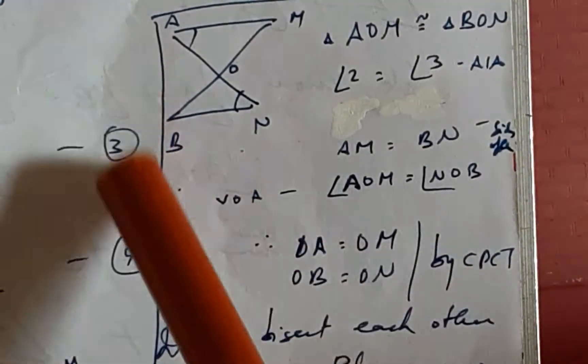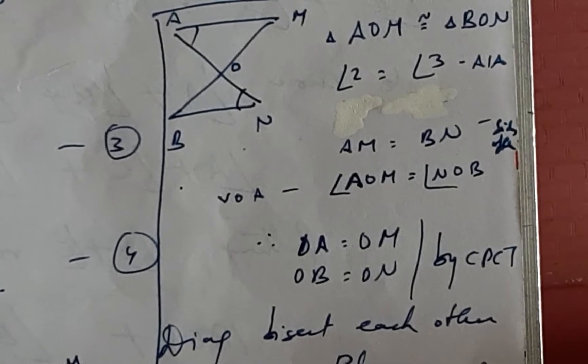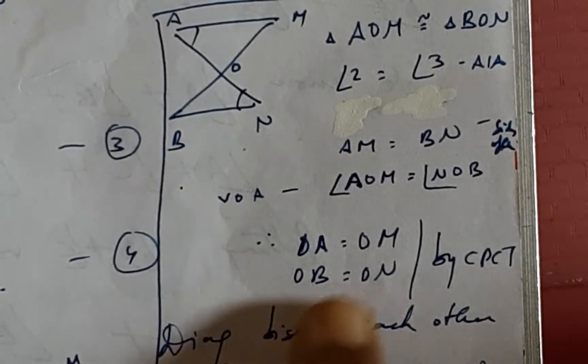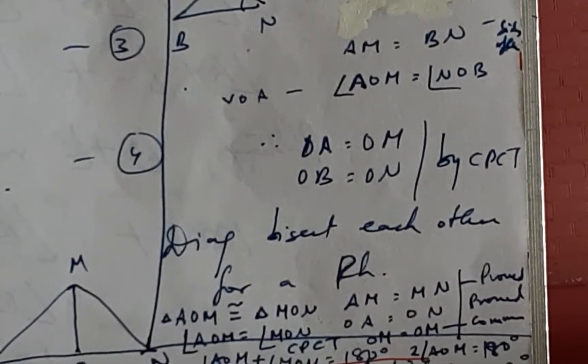By first arriving at congruency between these two diagonals, and then finally, since this is the case, it means that the diagonals are being bisected.